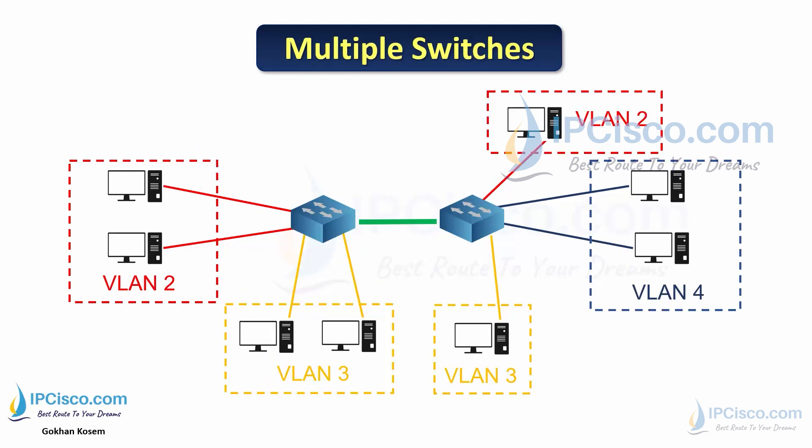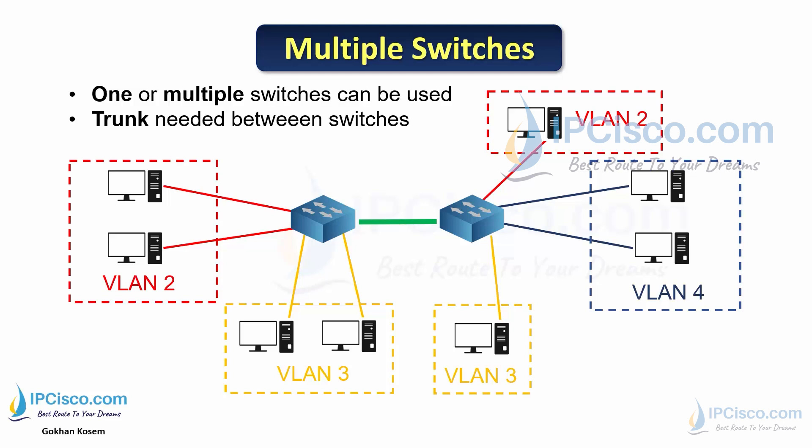We can also create VLANs across multiple switches. Here, there are two switches — the first has VLAN 2 and VLAN 3, and the second has VLAN 2, VLAN 3, and VLAN 4. Devices in VLAN 2 on both switches act as if connected to the same local area network. To do this, we need to configure a trunk port between the switches. With multiple switches and multiple VLANs, trunk links are required so that devices in the same VLAN can communicate over these trunk links.